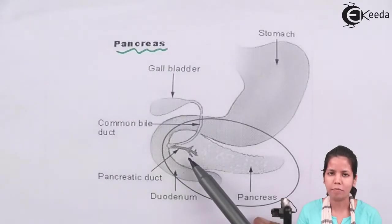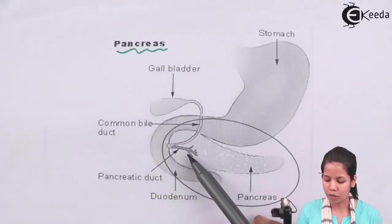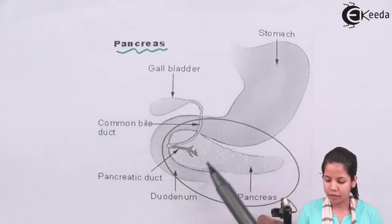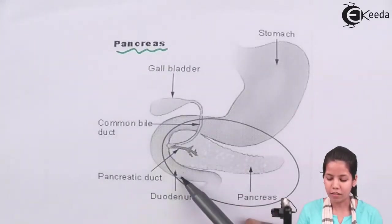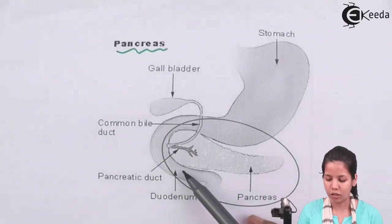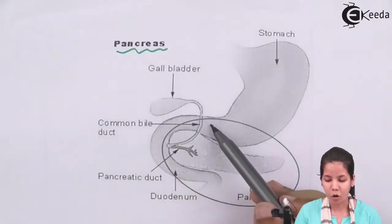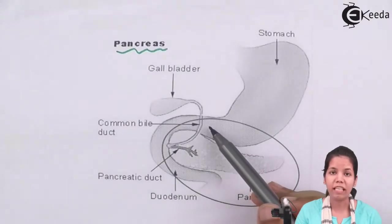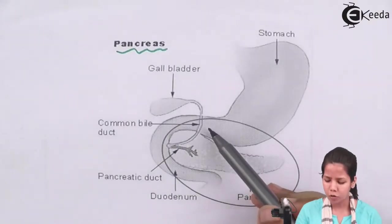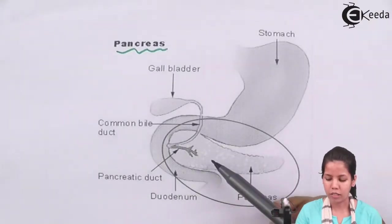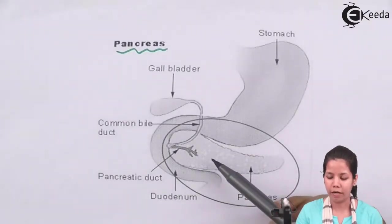The pancreatic juices include pepsin, trypsin, amylase, and such enzymes. The duodenum is the region present just associated with this, and this is the common bile duct which carries bile to the pancreatic juices if required.